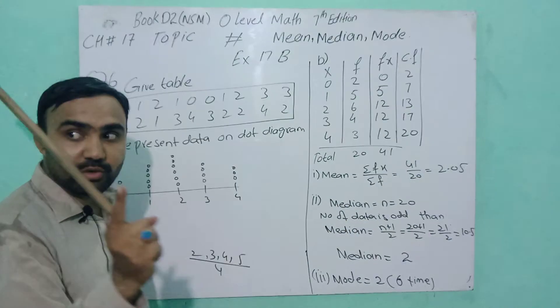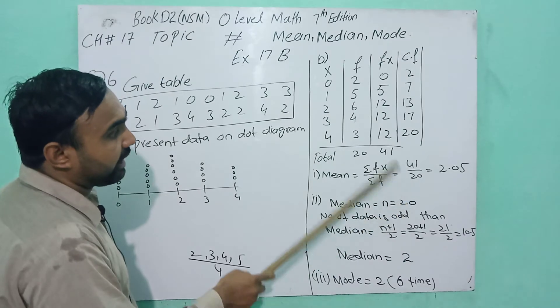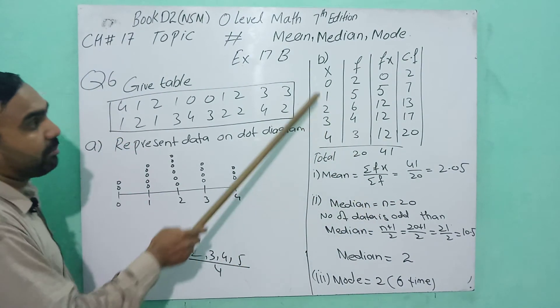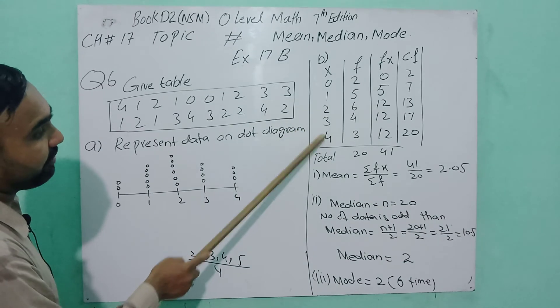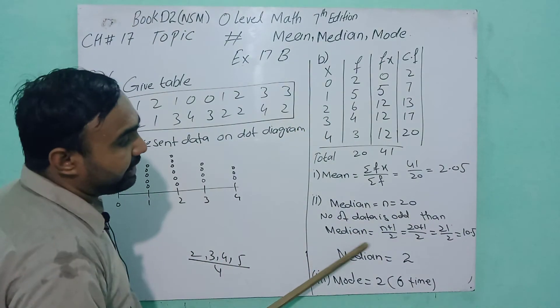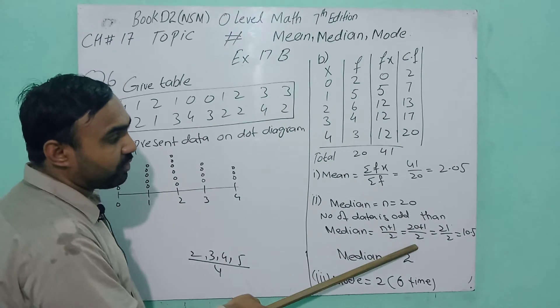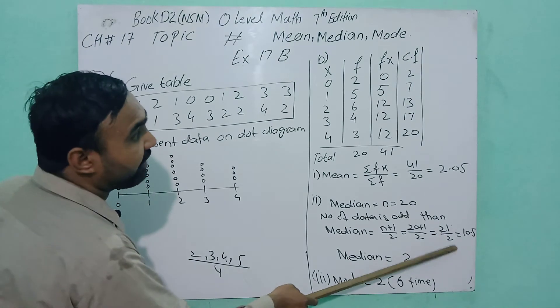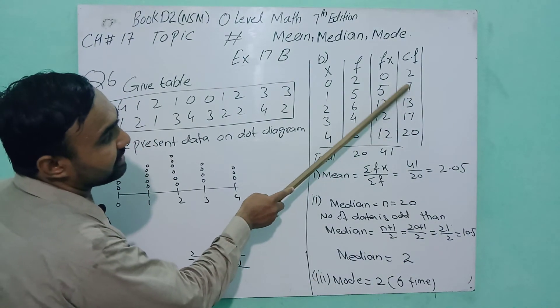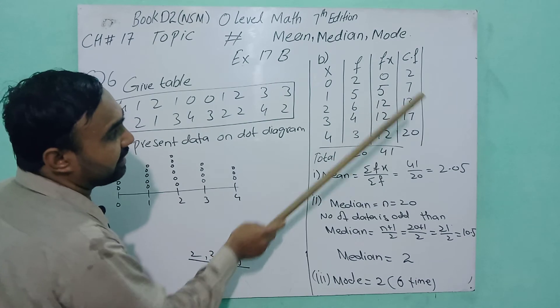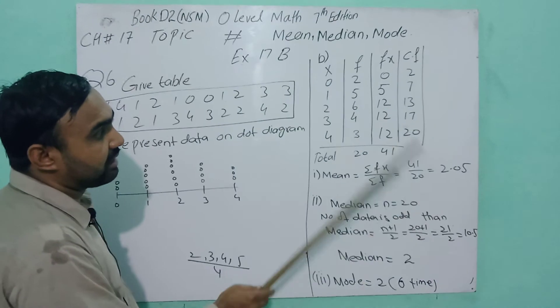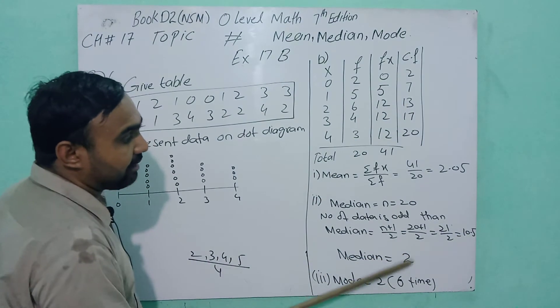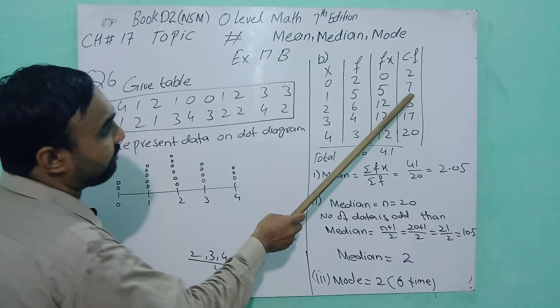Median: n equals 20, total sum of frequencies is 20. This is even. If the number of data is odd, then median is (n+1)/2. (20+1)/2 = 21/2 = 10.5. Now 10.5 is between 7 and 13. 10.5 is nearest to 13, which means in front of 13 is 2. The median is 2.